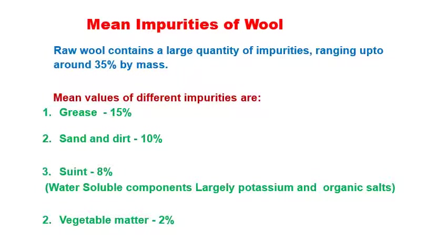Raw wool contains a large quantity of impurities — on average up to 35 percent by mass. Mean values for different impurities are: grease about 15 percent, sand and dirt about 10 percent, soot (sweat gland secretion with salts) around 8 percent, and vegetable matter around 2 percent. Vegetable matter includes different kinds of buds, flowers, and leaves, sometimes called twigs or bars. The next table will show the range values for these impurities.